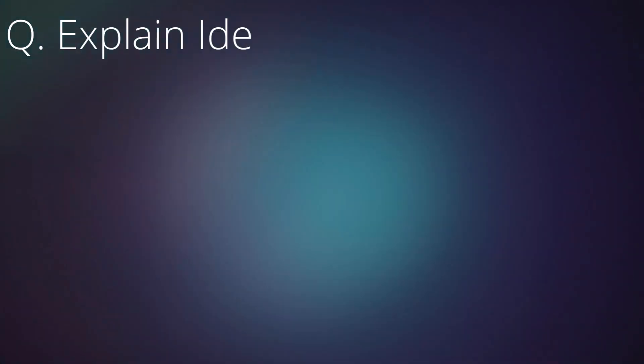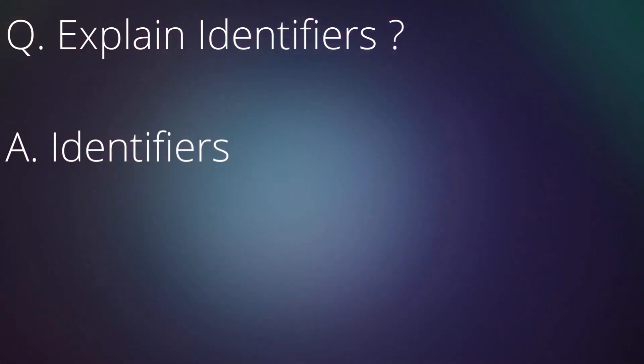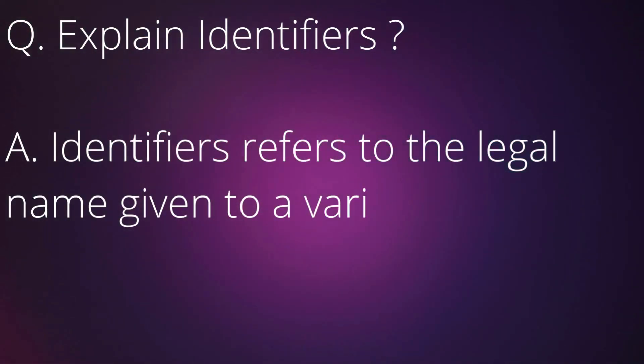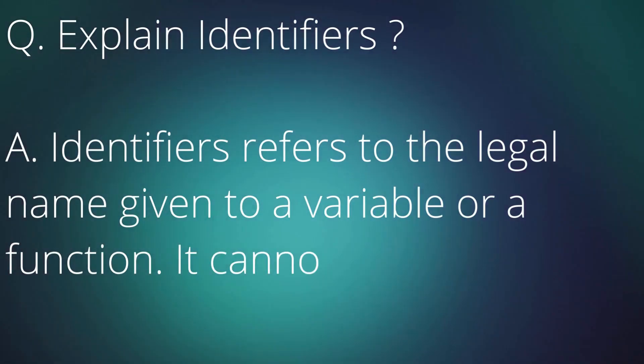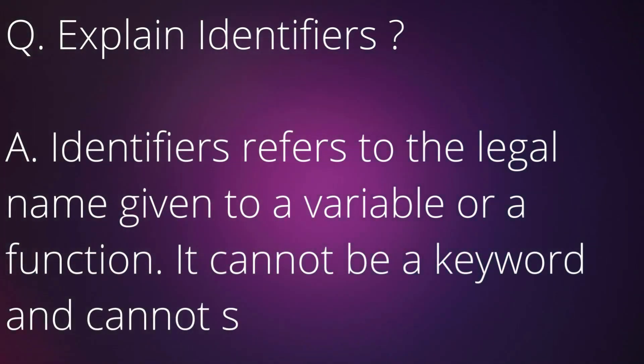Question: Explain identifiers. Answer: Identifiers refer to the legal name given to a variable or a function. It cannot be a keyword and cannot start with a number.